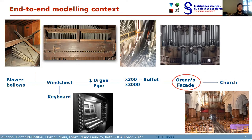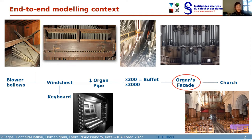The keyboard transmits the order of which pallet or valve is going to open, and then conveys air pressure to one pipe or more pipes in the wind chest. Assuming a multiplicity of 300 or 3000, we have an amount comparable to the modeling cavities we are presenting today — the positive of the organ in St. Elizabeth d'Hongrie or the great organ.